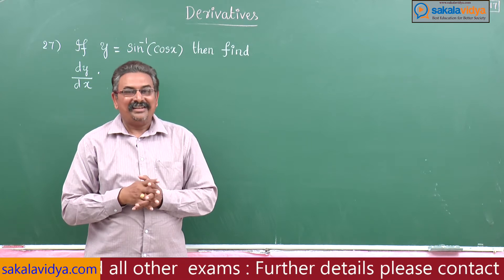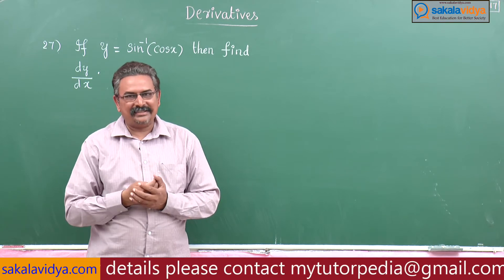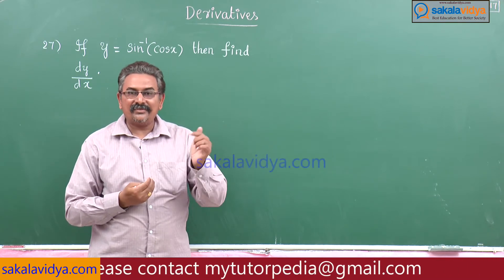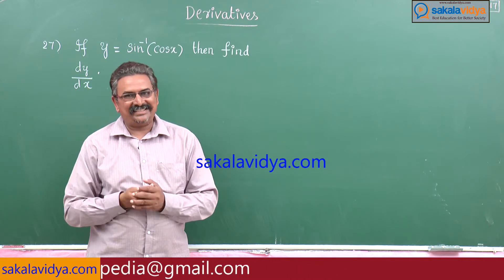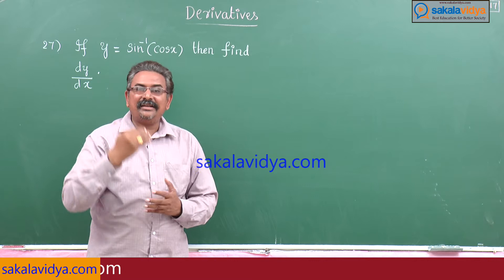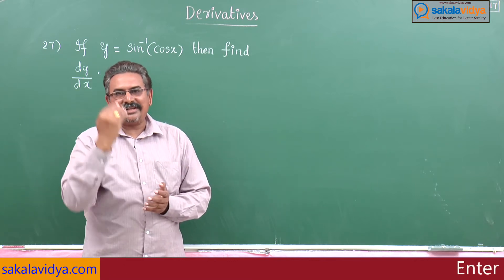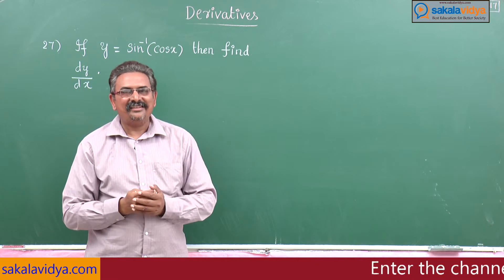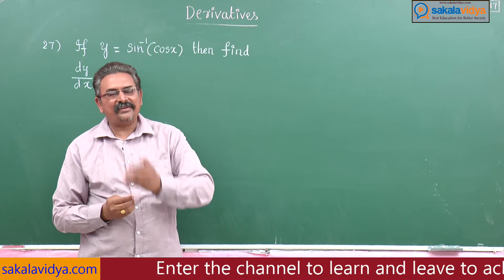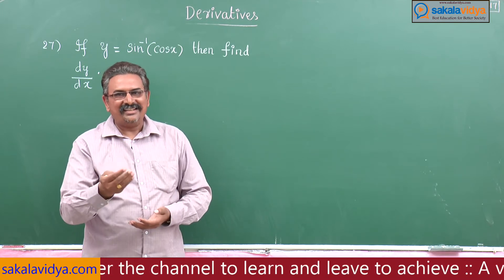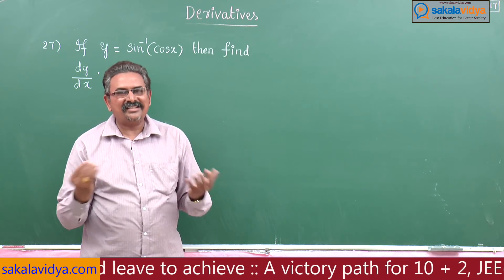So, cos x is replaced by sin of (90 degrees minus x), and sin inverse of sin(90 degrees minus x) gives you 90 minus x. So if y is equal to 90 minus x, differentiating both sides with respect to x: dy by dx equals 0 minus 1, which is minus 1.